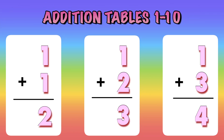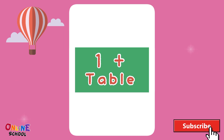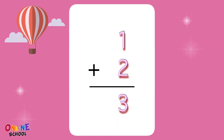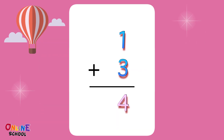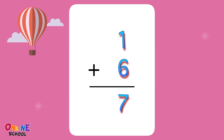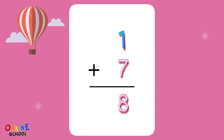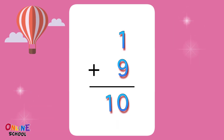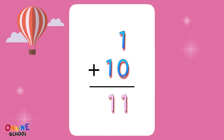Addition Tables 1 to 10. Table 1: 1 plus 1 equals 2, 1 plus 2 equals 3, 1 plus 3 equals 4, 1 plus 4 equals 5, 1 plus 5 equals 6, 1 plus 6 equals 7, 1 plus 7 equals 8, 1 plus 8 equals 9, 1 plus 9 equals 10, 1 plus 10 equals 11.